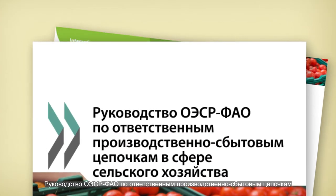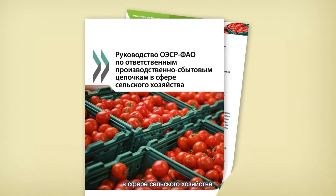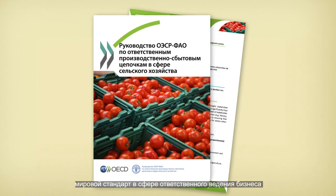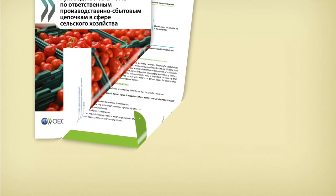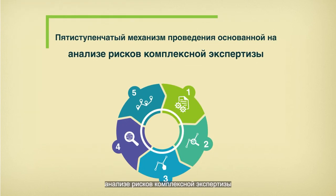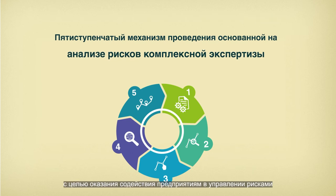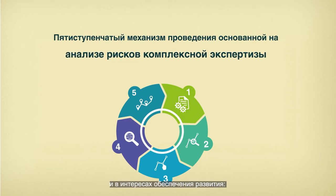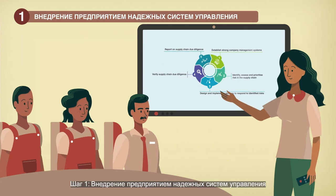The OECD-FAO guidance for responsible agricultural supply chains is the global standard for responsible business conduct in the agricultural sector. It introduces a five-step framework for risk-based due diligence to support companies in managing risks while contributing to development.